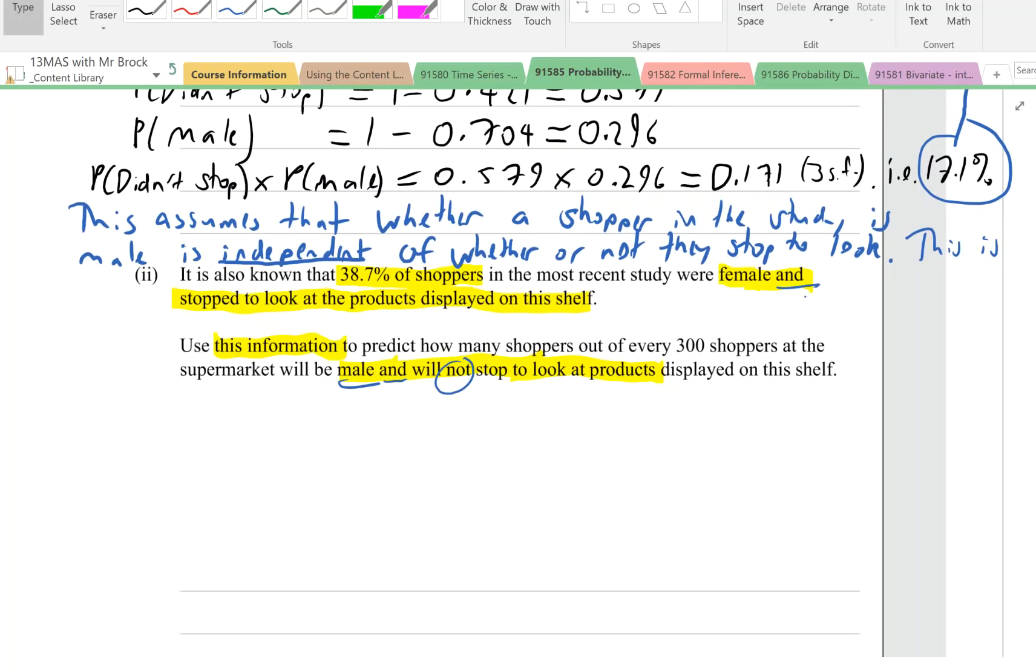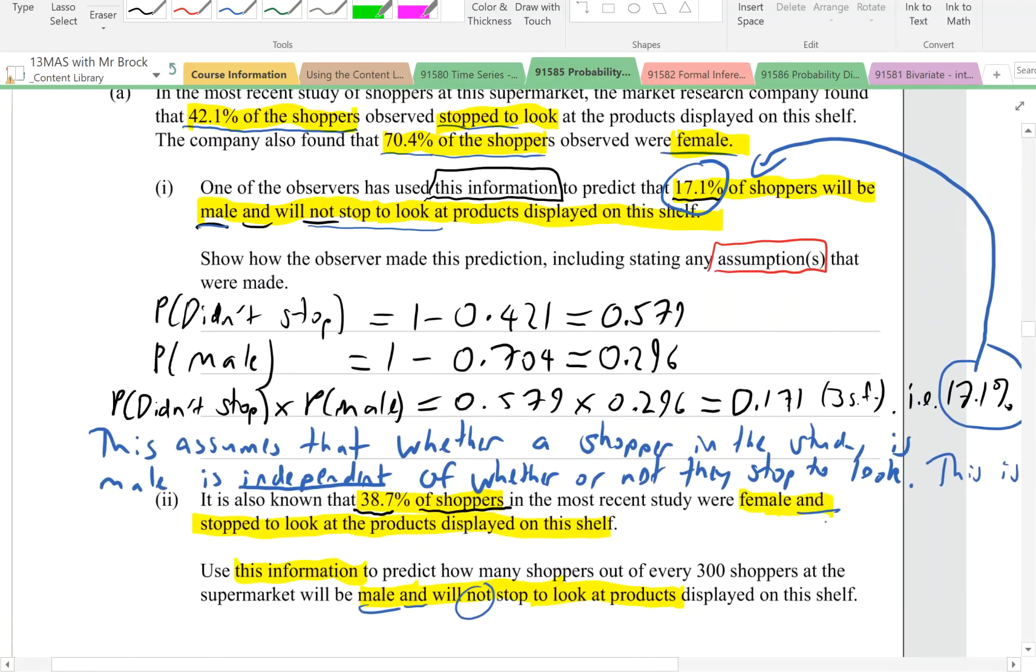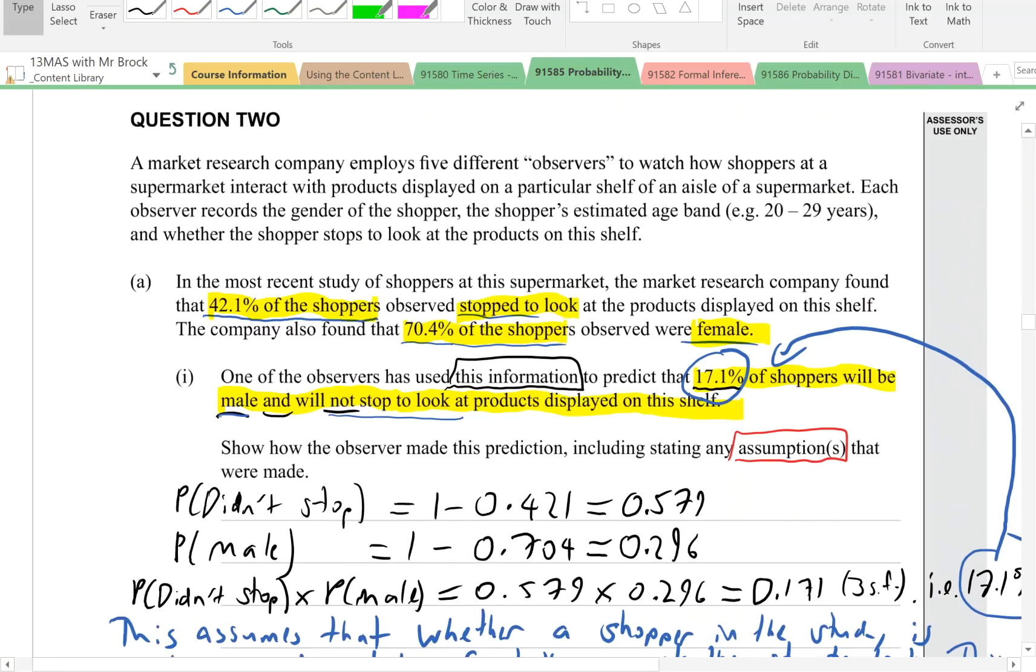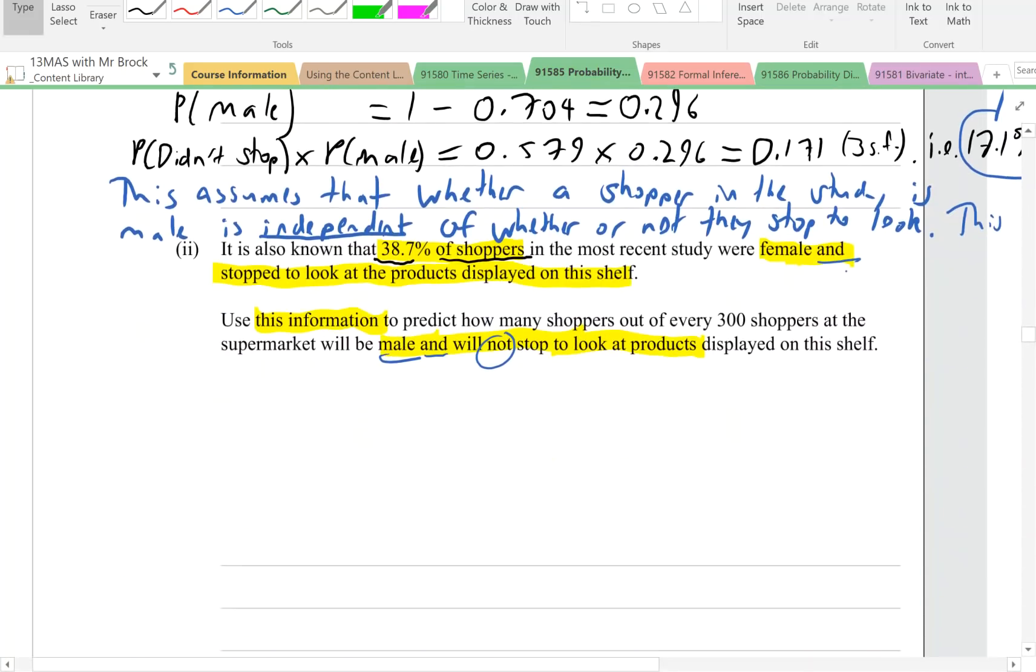Can we get away with a two-way table? We're dealing with gender and we're dealing with whether they stop or not. So therefore we don't need a three-way Venn diagram. The 38.7% is of all the shoppers, so that's not a conditional probability. Therefore we don't need a tree diagram. We can get away with a two-way table, which is good.